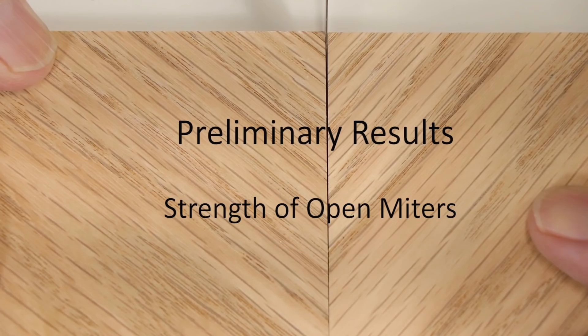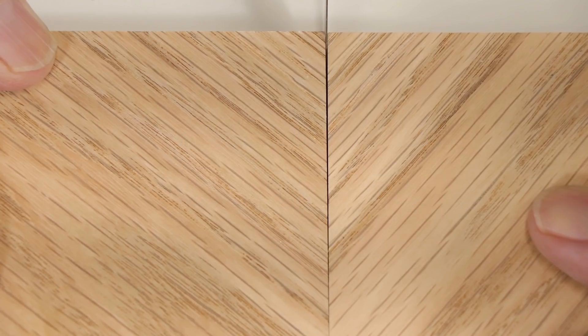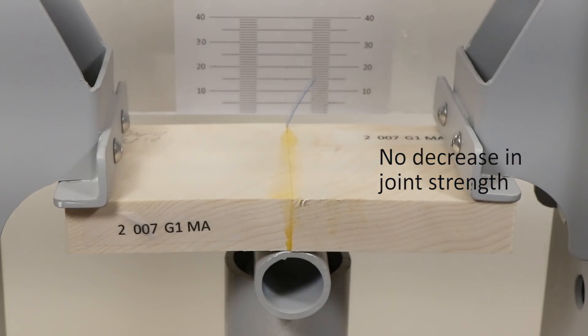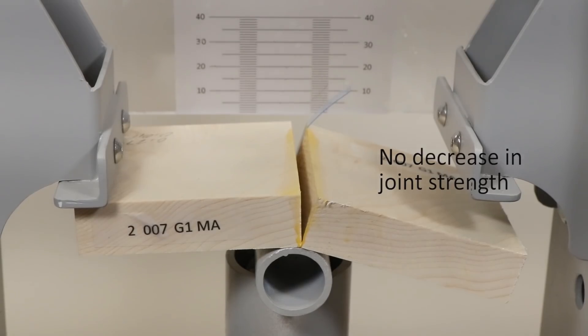I can report this much. For glue lines that are about 3 inches or 75 millimeters long, a gap at one end of a miter that measures one tenth to four tenths of a millimeter does not seem to weaken the joint appreciably. Those joints snap open at forces similar to joints with no spacer that were closed completely. You can ignore errors of this size.